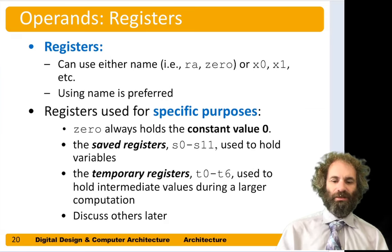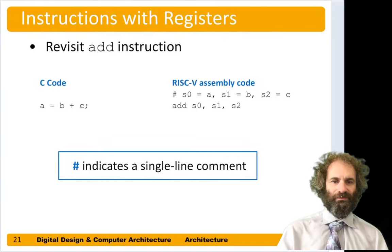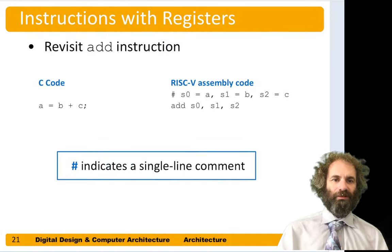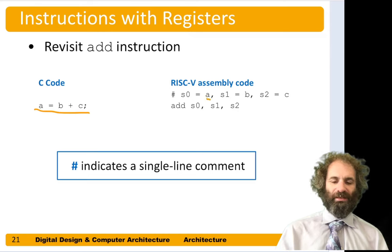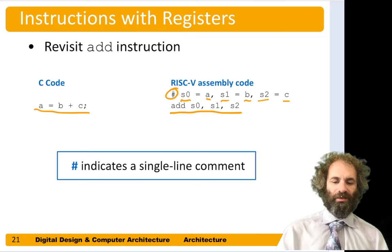As a programmer, you can use either name — the X names or things like RA and zero — but using the conventional name is clearer to the reader. Let's rewrite our previous instructions using these real registers. We had A equals B plus C, and now let's say we wanted to keep variable A in register S0, B in S1, and C in S2. We would rewrite our program as: add S0, S1, S2. The pound symbol in an assembly language program indicates a single-line comment, and it's a good idea to have comments in your code to indicate what registers are being used for what variables.